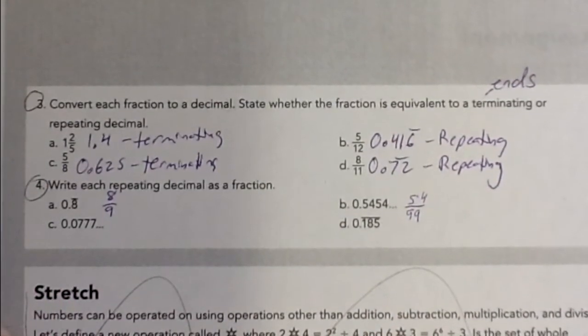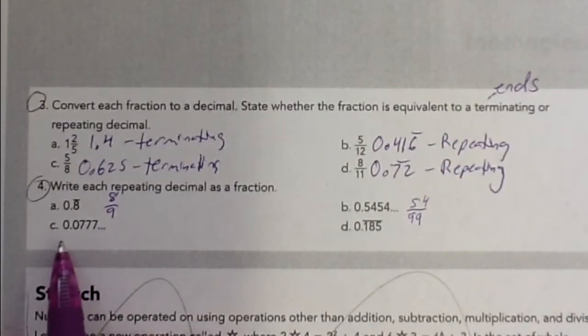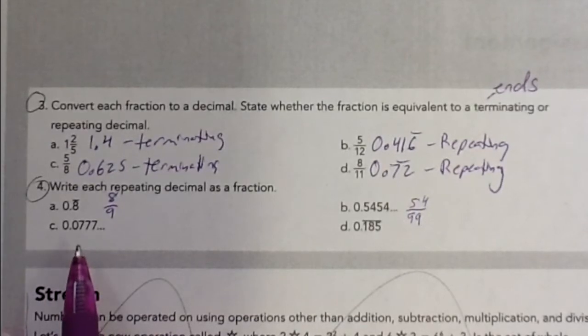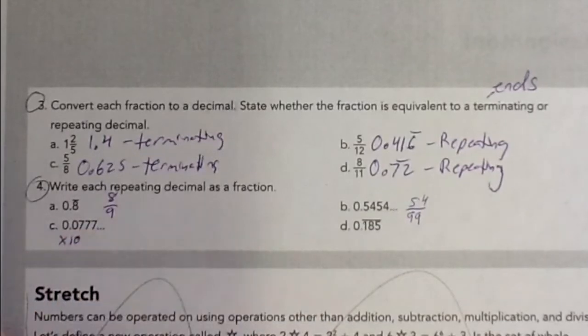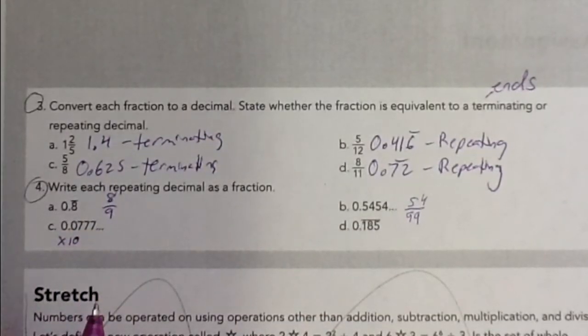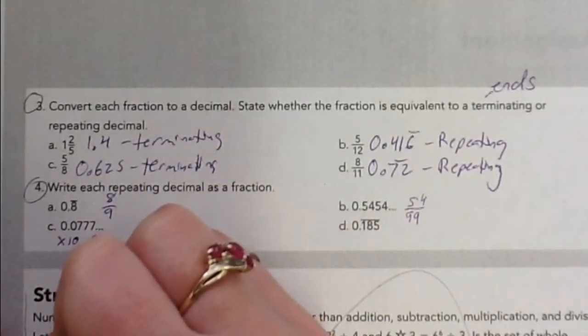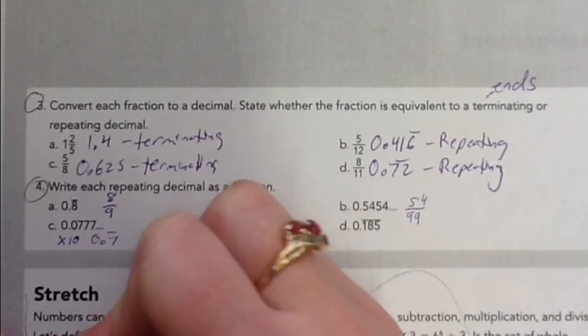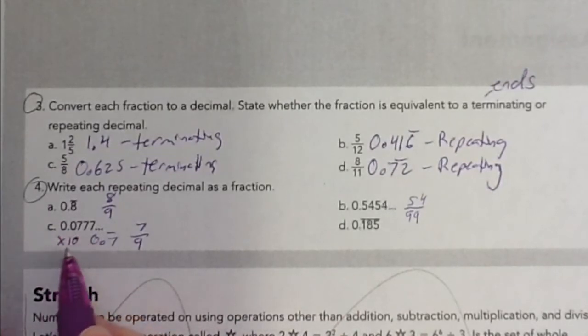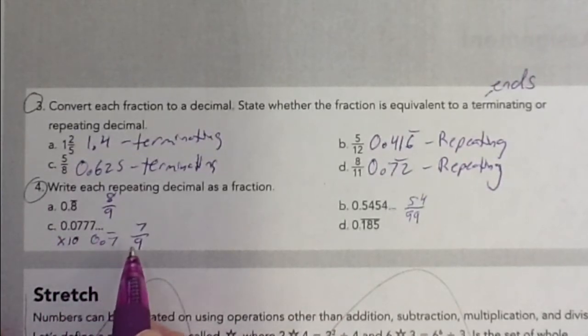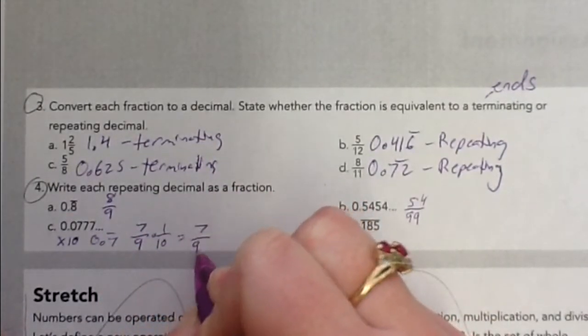For C, we're going to have to do something interesting. Because what's repeating is these 7s, but this 0 is in the way. So what we can do is we can artificially multiply it by 10. And then we'll divide the answer by 10 to balance it out. So we're actually going to change this into 0.7 repeating and make that 7 over 9, which is that 0.7. But because I had multiplied by 10, I need to divide this by 10, which is the same as multiplying it by 1 tenth. So this is going to be 7 over 90.